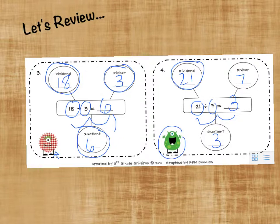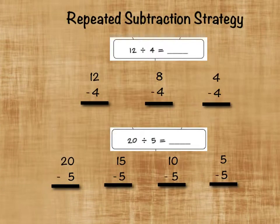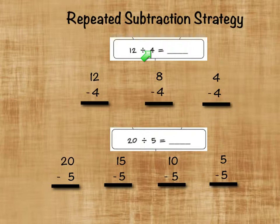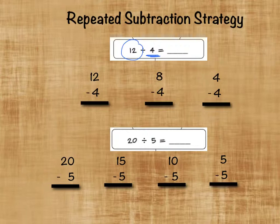Now let's see what happens. We're looking at division with a repeated subtraction strategy. So let's look at a couple division problems. We have 12 divided by 4 equals something. Well, we can either know our multiplication facts backwards, but if you don't, we can use repeated subtraction. We take our dividend, which is the 12, and we subtract the divisor until we have 0.